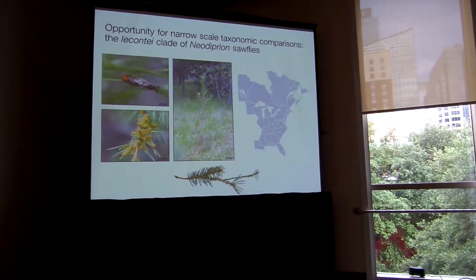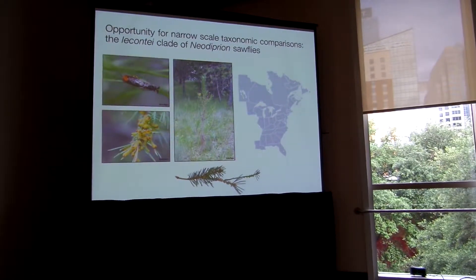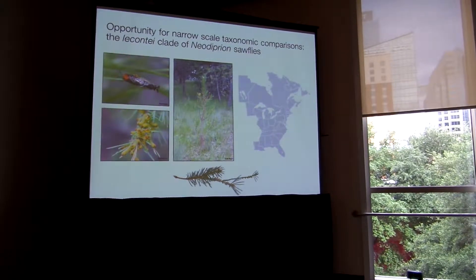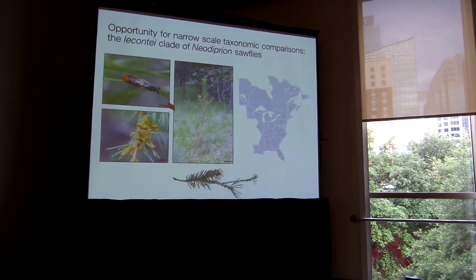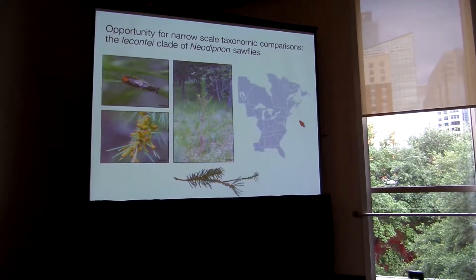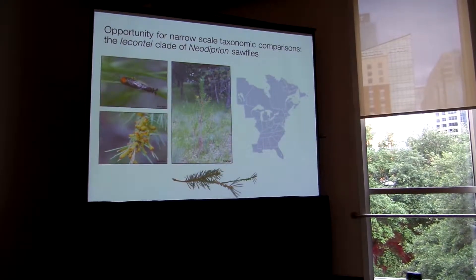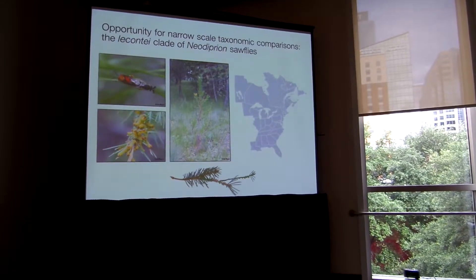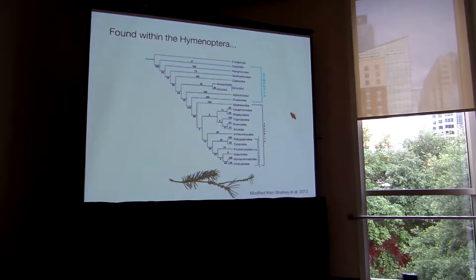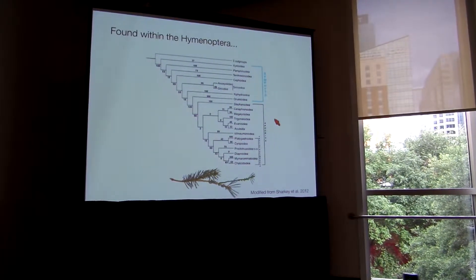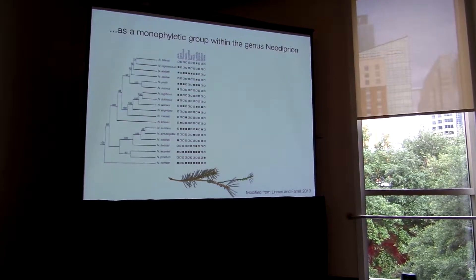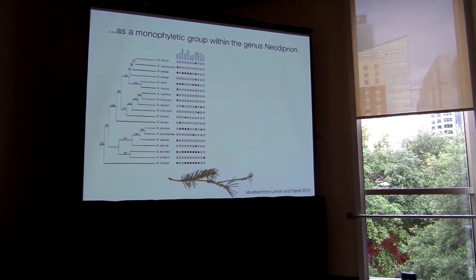To address these caveats, I would like to approach this question with the Lecontii clade because we have a number of life history information and we can take advantage of their monophyly for narrow-scale comparisons. The Lecontii clade is a group of about 20 phytophagous Hymenoptera found across eastern North America. Sawflies are also known as the Symphyta, which is the other sub-order within the Hymenoptera. The more famous ants, bees, and wasps are all part of the Apocrita. Within the Symphyta, the Neodiprion sawflies are within the Tenthredinoidea, and the Lecontii clade is a monophyletic group within the Neodiprion genus.